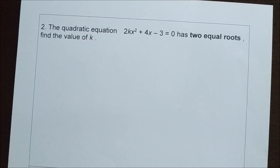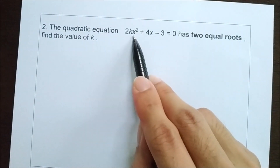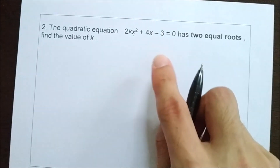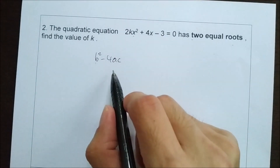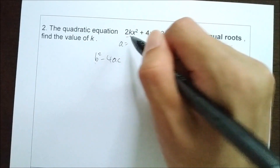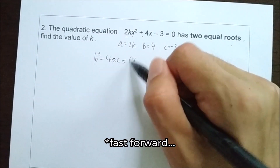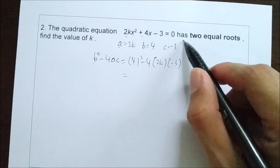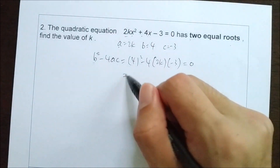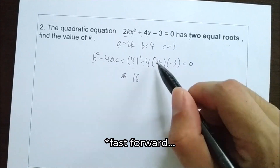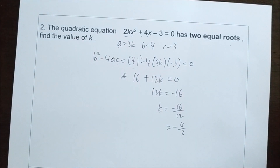Now we look at question number 2. The quadratic equation 2kx squared plus 4x minus 3 equals to 0 has two equal roots. Since this is a quadratic equation, we can use the discriminant to help us find the value of k. b squared minus 4ac is the discriminant. Before we use it, we need to find the values of a, b, and c. So a is equal to 2k. Since this is already in general form, we take the values directly. Given that it has two equal roots, b squared minus 4ac equals to 0. Solving this, k has a value of negative 4 over 3.